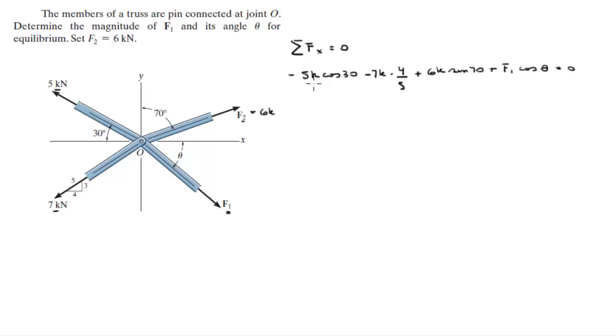So when you solve this, you apply this into your calculator, you're going to get that this is equal to negative 4.29 plus F1 cosine of theta is equal to zero. And this is F1 cosine of theta is equal to 4.29.